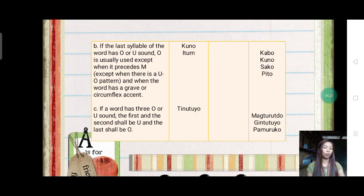For example, we have here the magturutdo, which is often used by our teachers. Magturutdo, there are three sounds of u, so the first two is u, but the last is o. Just like this example: gintutuyo and pamurutuko.